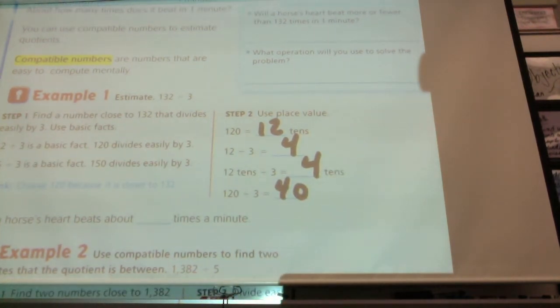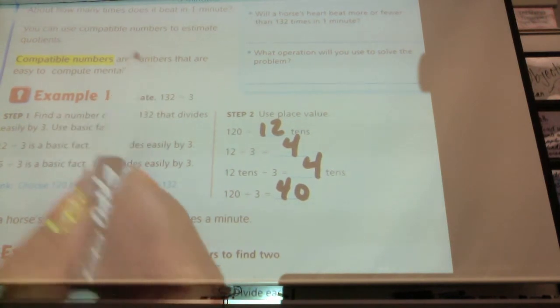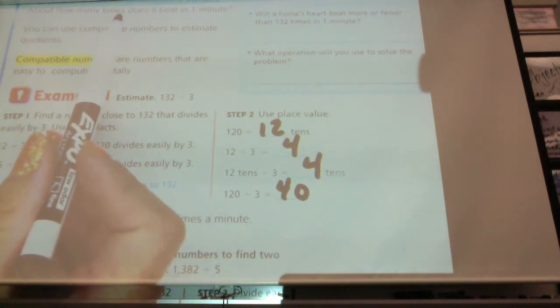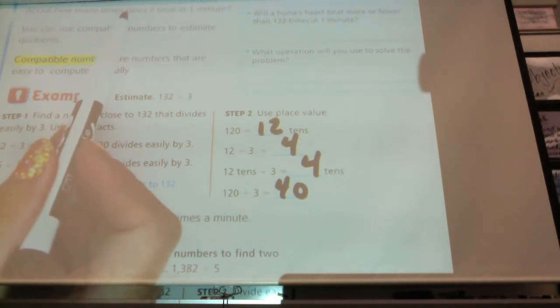So if we're going to be estimating and we see that word about, we can find a compatible number that's going to be easy for us to divide. Did we round 132 to the nearest number? No. We didn't, because if we rounded 132 to the nearest ten, what would we round it to? 130.